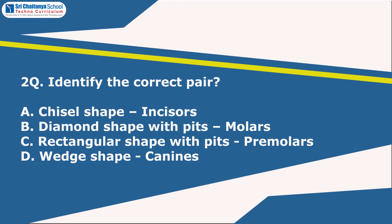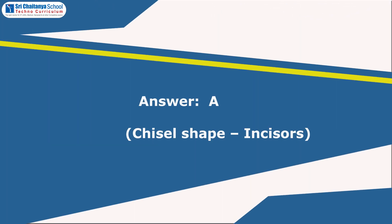Now the second question. Identify the correct pair. A. Chisel shape — Incisors. B. Diamond shape with pits — Molars. C. Rectangular shape with pits — Premolars. D. Wedge shape — Canines. Children, can you guess the answer? Yes, the answer is A. Chisel shape, that is incisors.